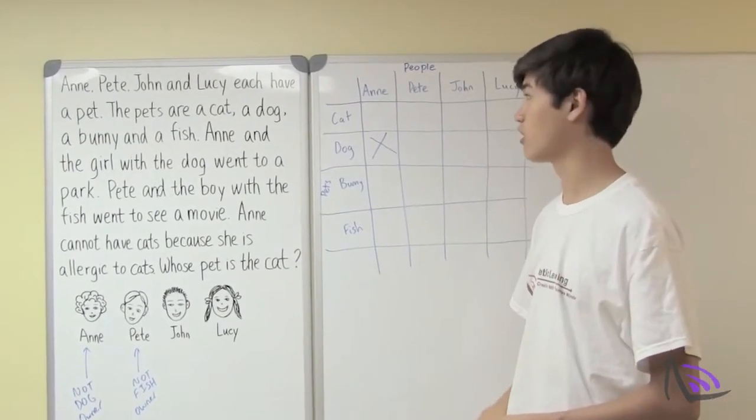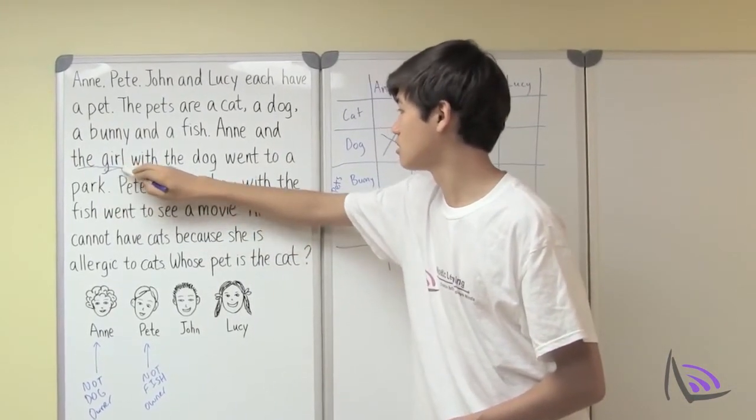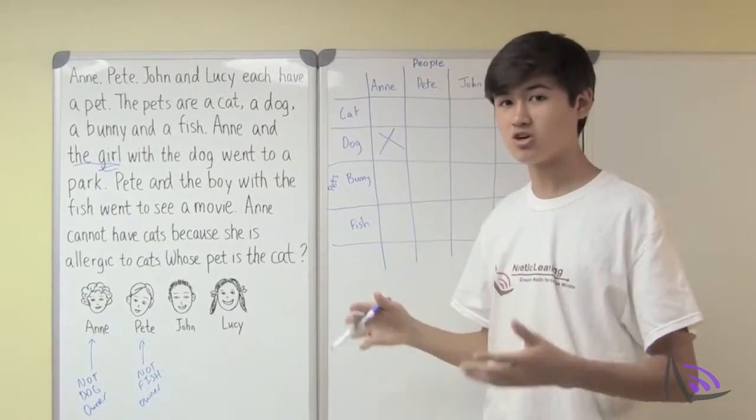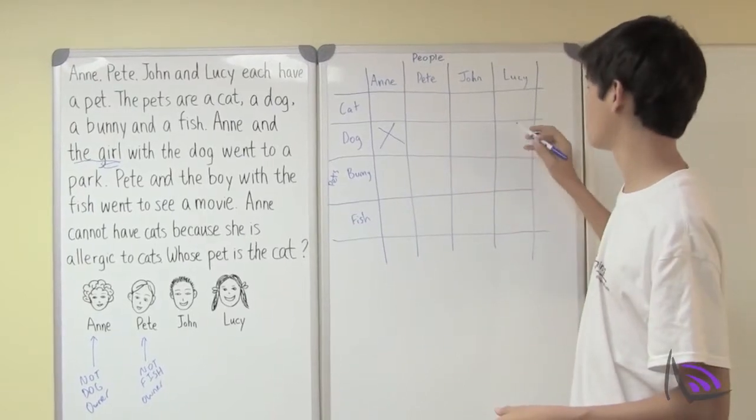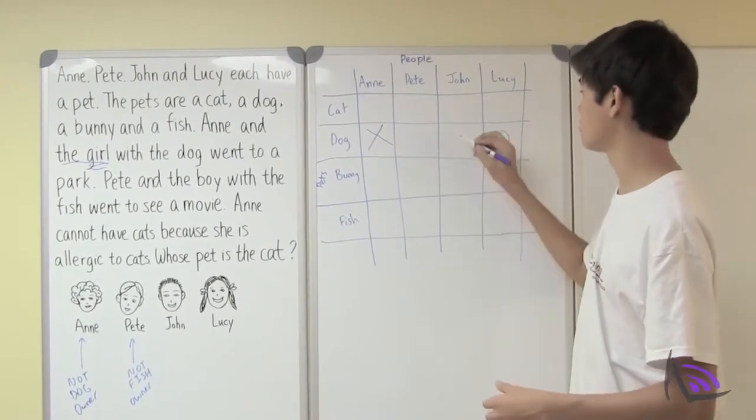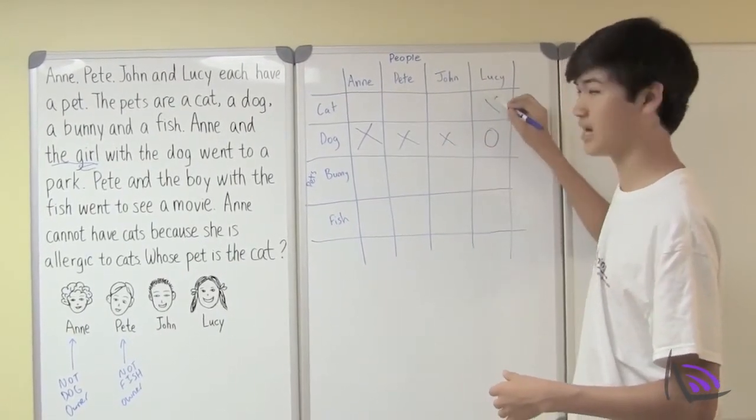Let's look over the sentence once more. Ann and the girl with the dog went to a park. So it must be a girl who owns the dog. And the only other girl left would be Lucy. And since Lucy owns the dog, no one else can own the dog. And Lucy can't own any other pet.